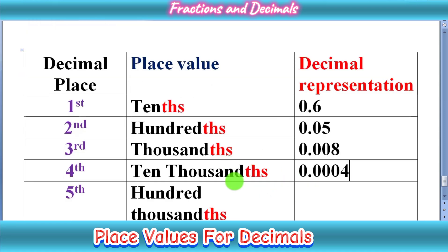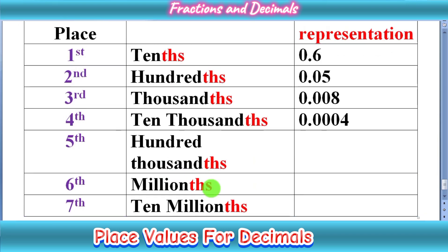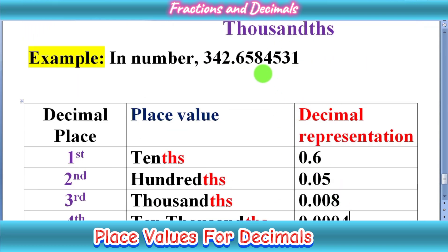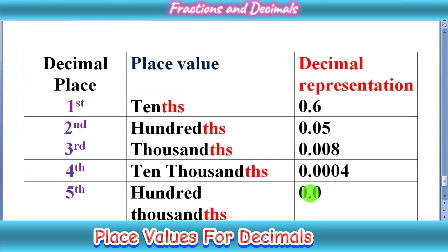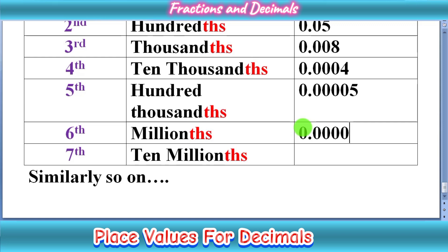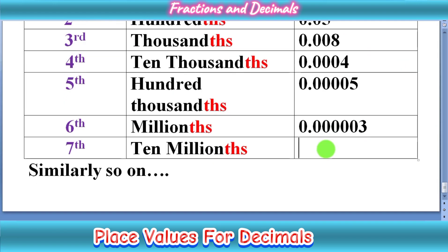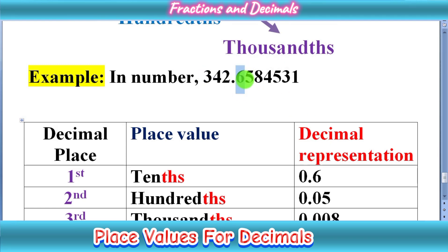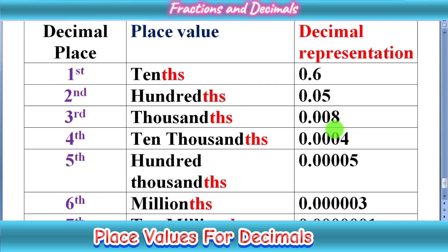As you can see the pattern, you can fill it in. The next place value is hundred-thousandths, after that we have the sixth place value of millionths, and the seventh place value is ten-millionths, and similarly so on. You can write all these digits in decimal form. So we have 5 — we can write 0.00005. Next we have 3 — we can write 0.000003, because we divide three by one million. The last digit is 1, so we divide one by ten million, giving us 0.0000001. So 1 is at the ten-millionths place. After adding all these numbers we get 0.6584531.